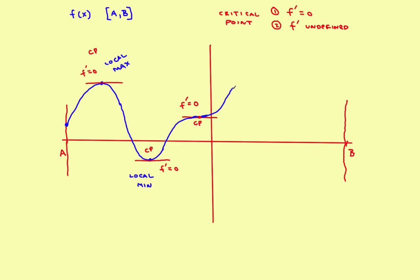Suppose the graph went way up here — that would be another local maximum with a horizontal tangent at that point. So f prime is equal to zero, it's a horizontal tangent, therefore it is a critical point and it is a local maximum.